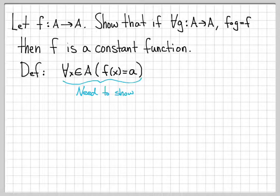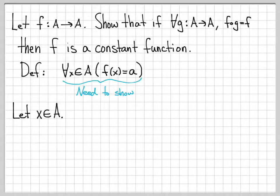This is what we need to establish in this problem. We have a function f, and we're told that if for all g functions from A to A, f composed of g equals f, then f is a constant function. Since we need to show this for all x in A, that's a big clue that we need to let x be an arbitrary element of A, so the subsequent math is good for all x in A.